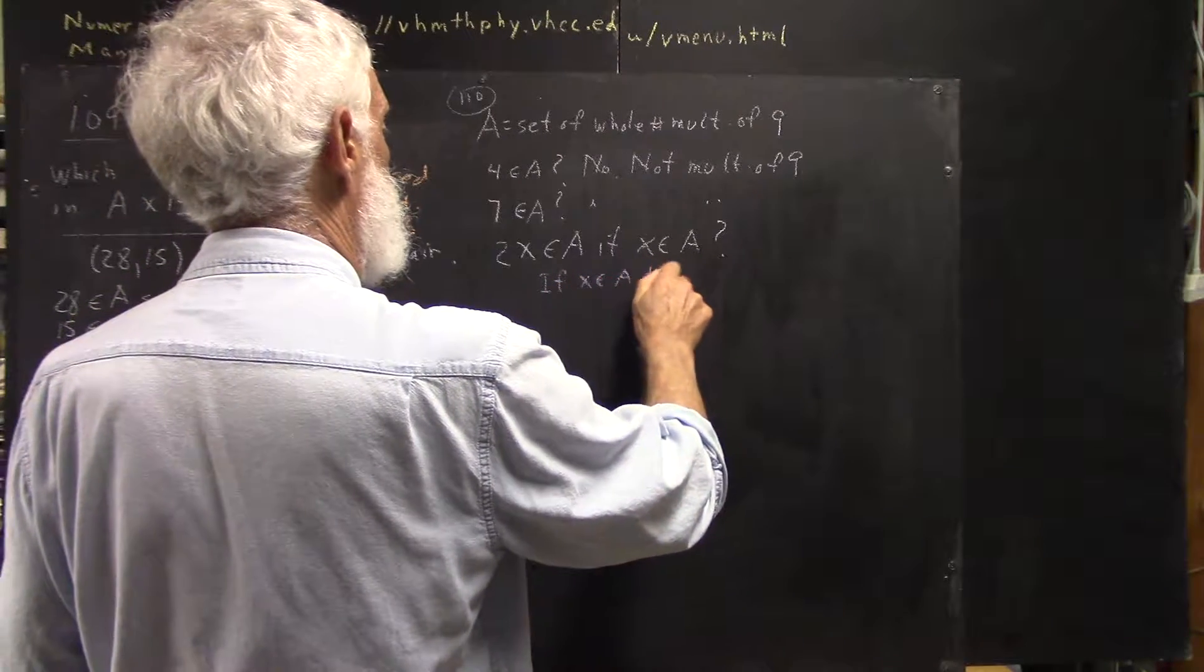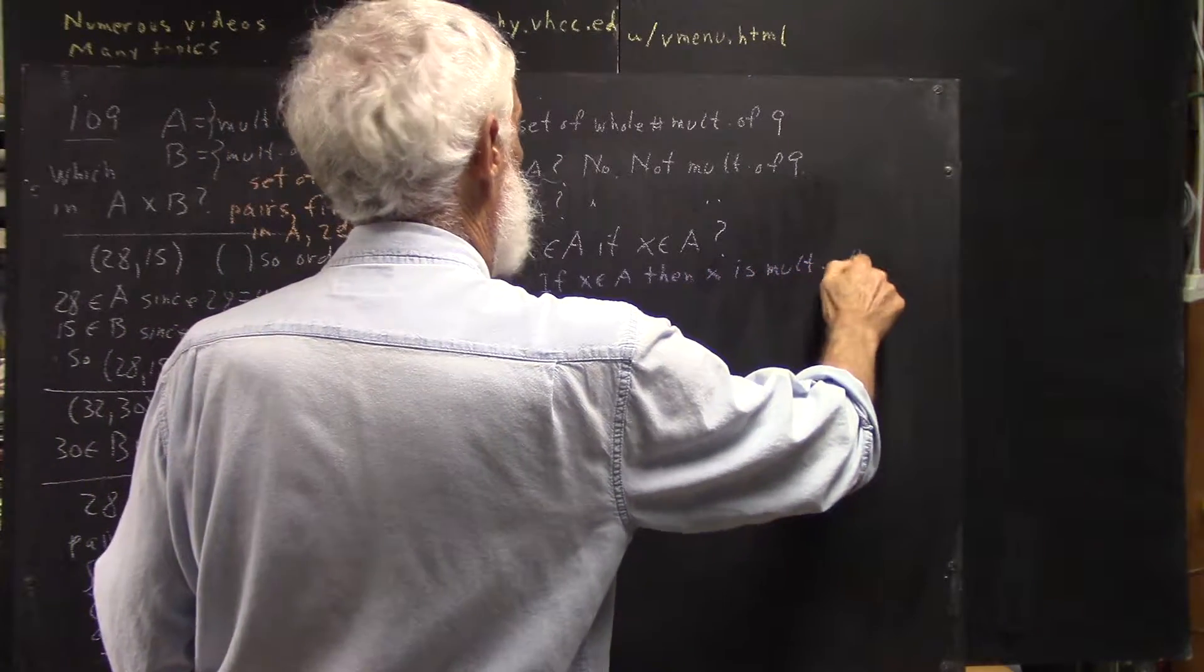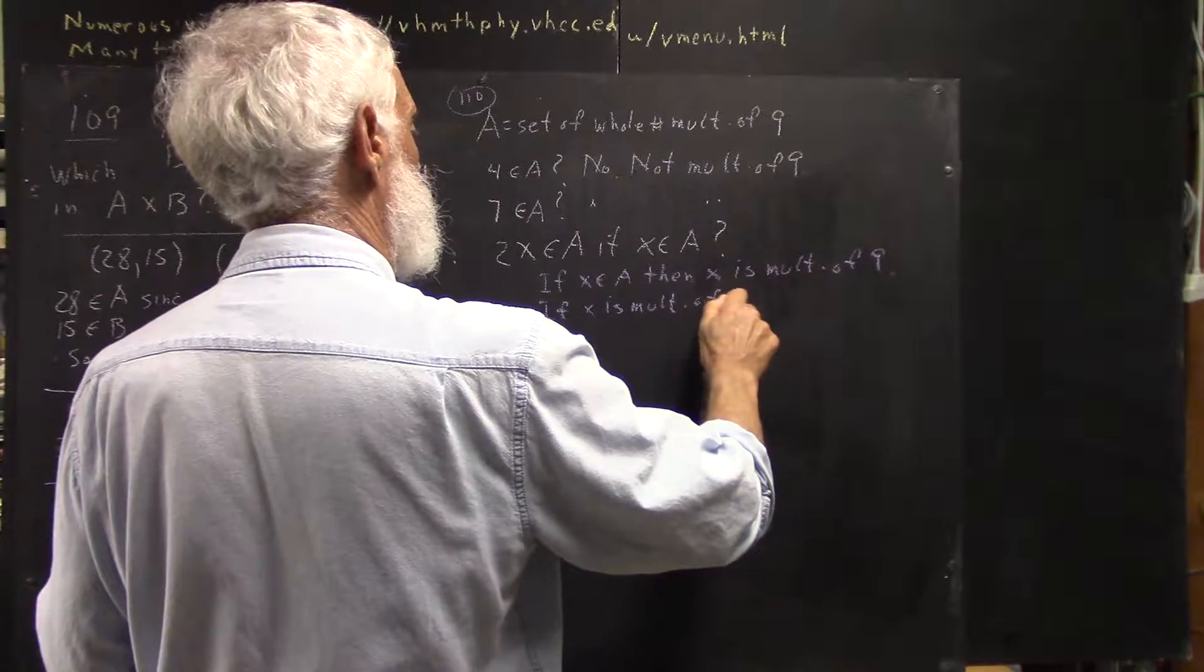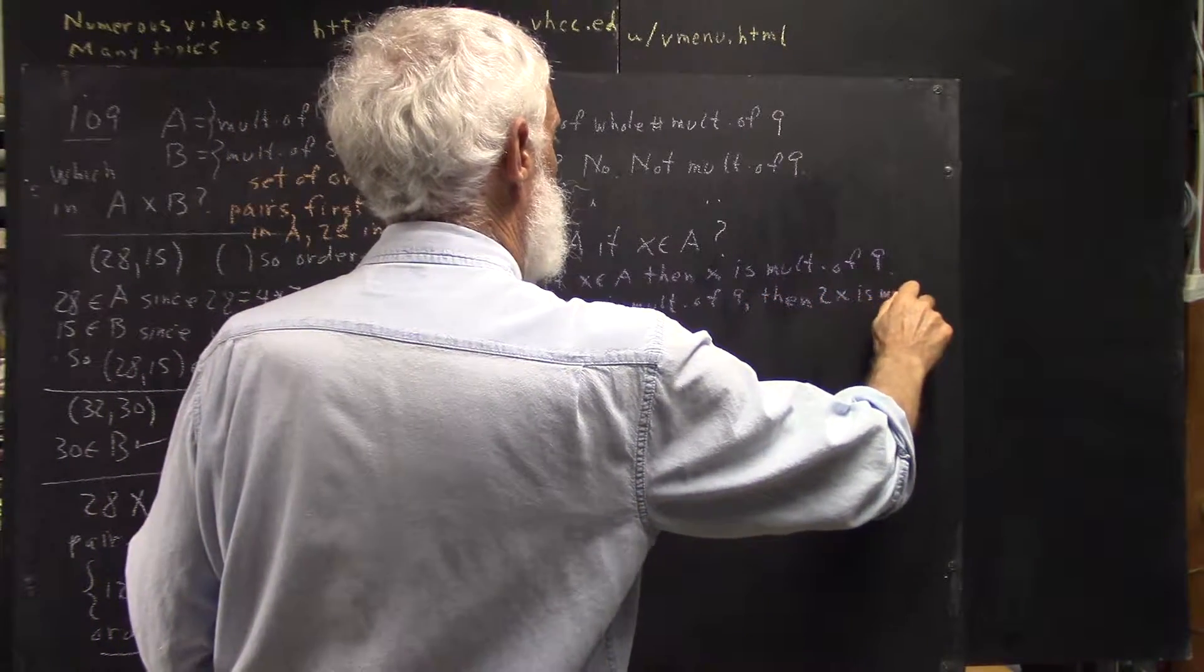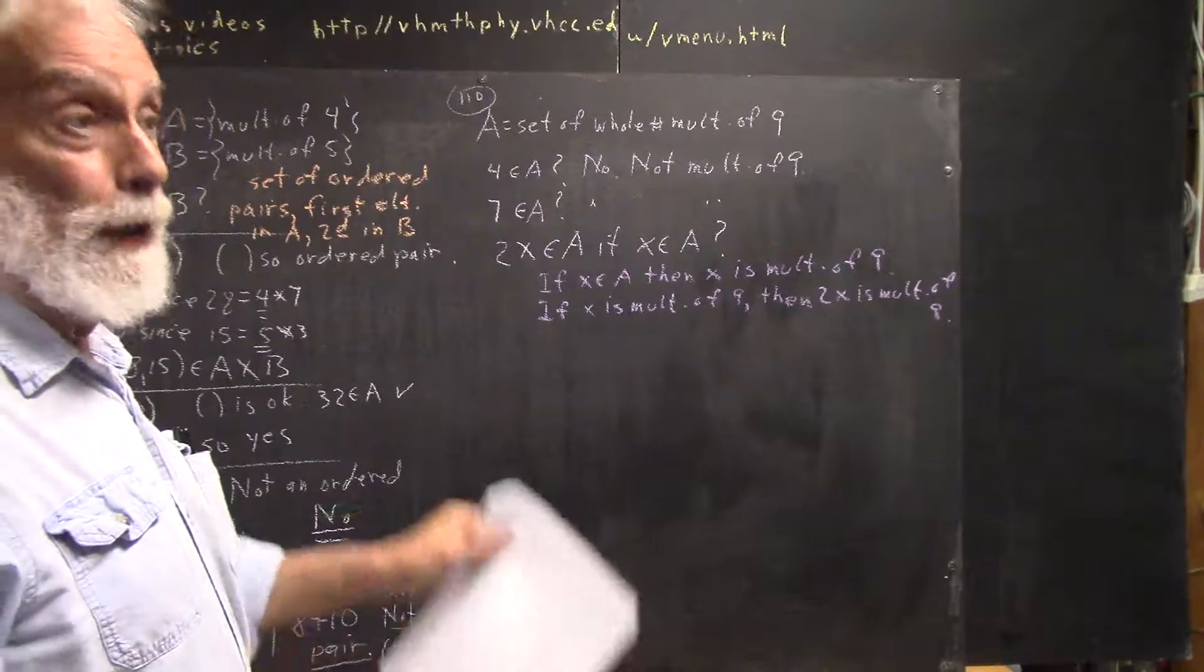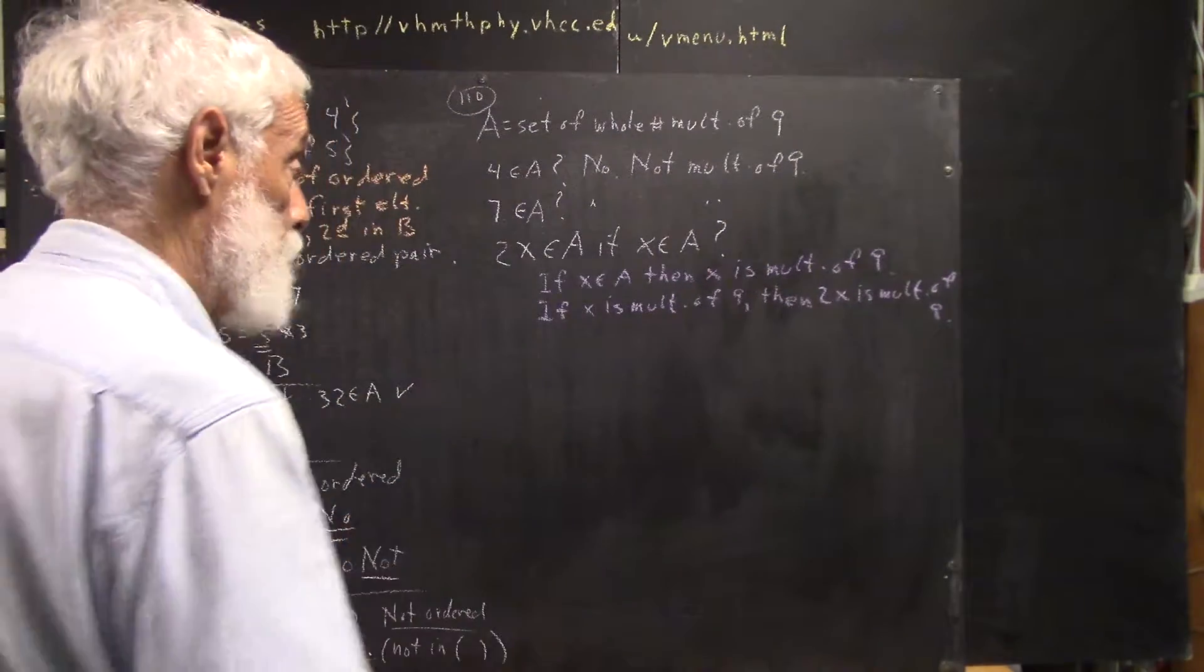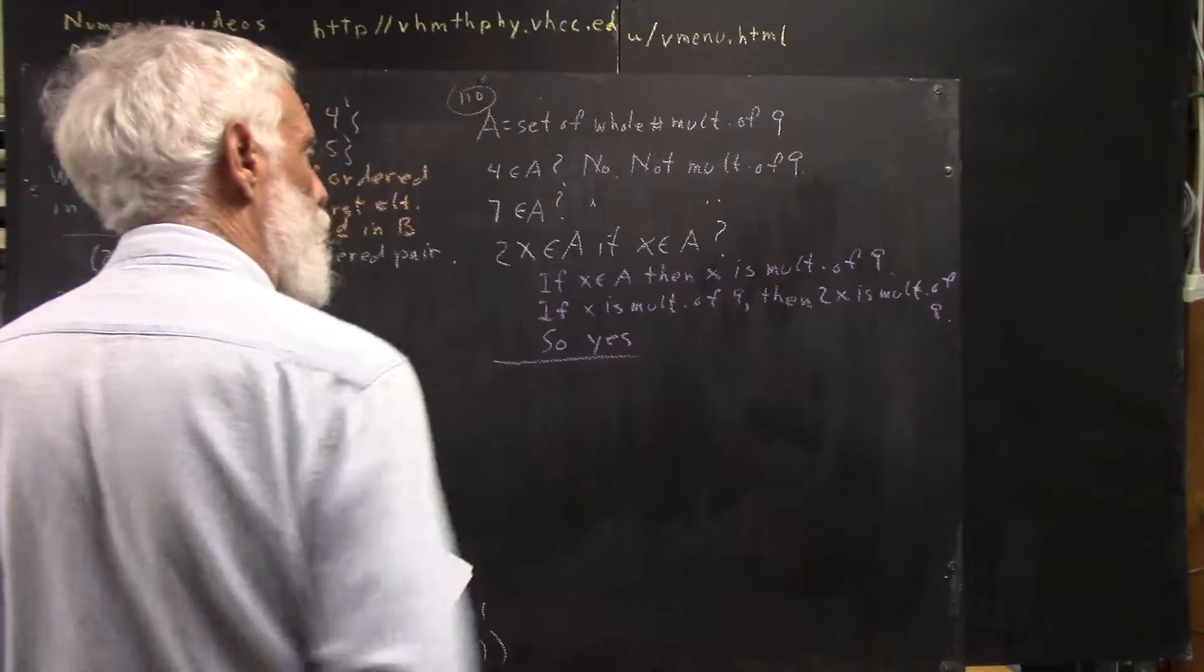If x was in A, then x is a multiple of 9. If x is a multiple of 9, then 2x is also a multiple of 9. Because, of course, if you multiply something that was obtained by multiplying something else by 9, and if you multiply that thing by 2, you are going to get something that is a multiple of 9. So, the answer to that question is yes.